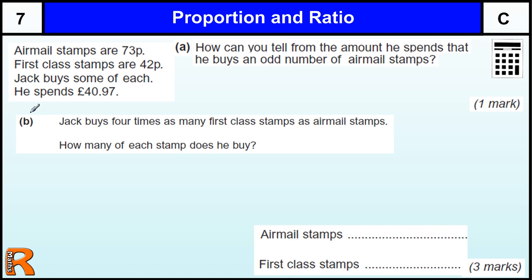Okay, proportion and ratio question to do with stamps. So we got airmail stamp 73p, first class stamps 42p, he spends 40 pounds 97 when he buys some of each.